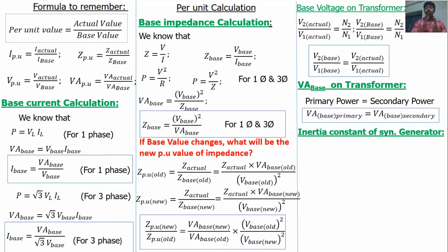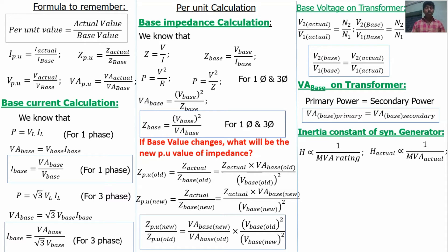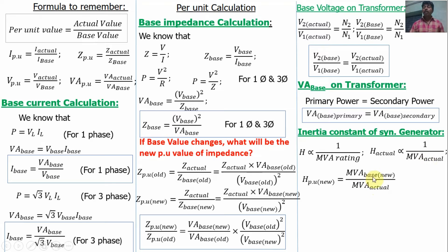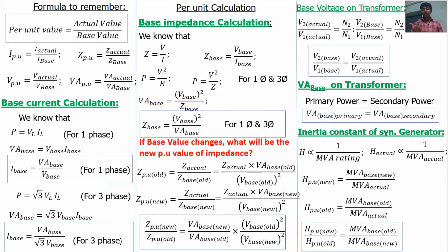Finally, for the inertia constant H of a synchronous generator: H actual is inversely proportional to the MVA rating. H per unit equals H actual divided by H base. Since it is inversely proportional, H_pu_new equals H_pu_old times (MVA base old divided by MVA base new). This gives the new per unit inertia constant when the MVA base changes.